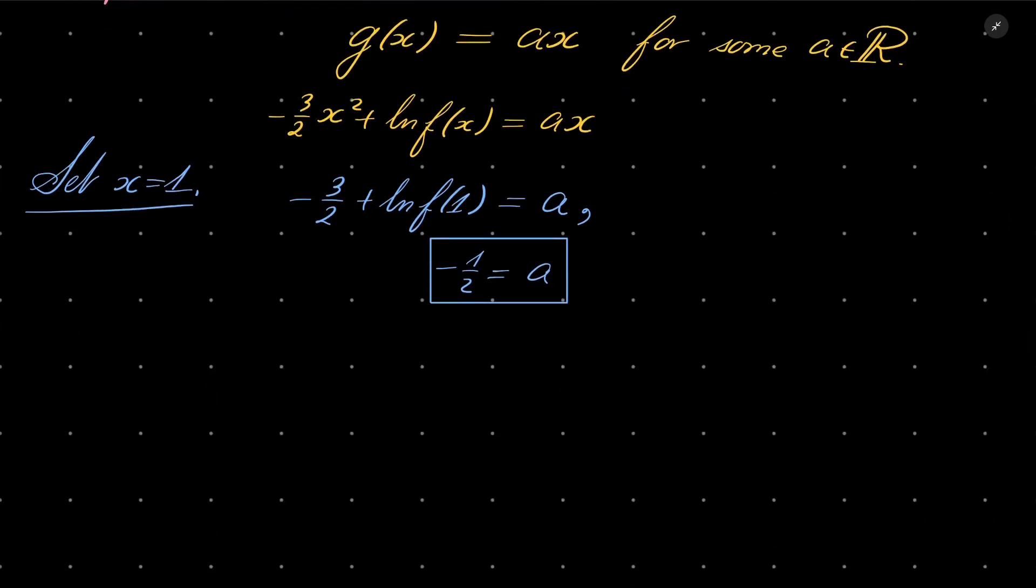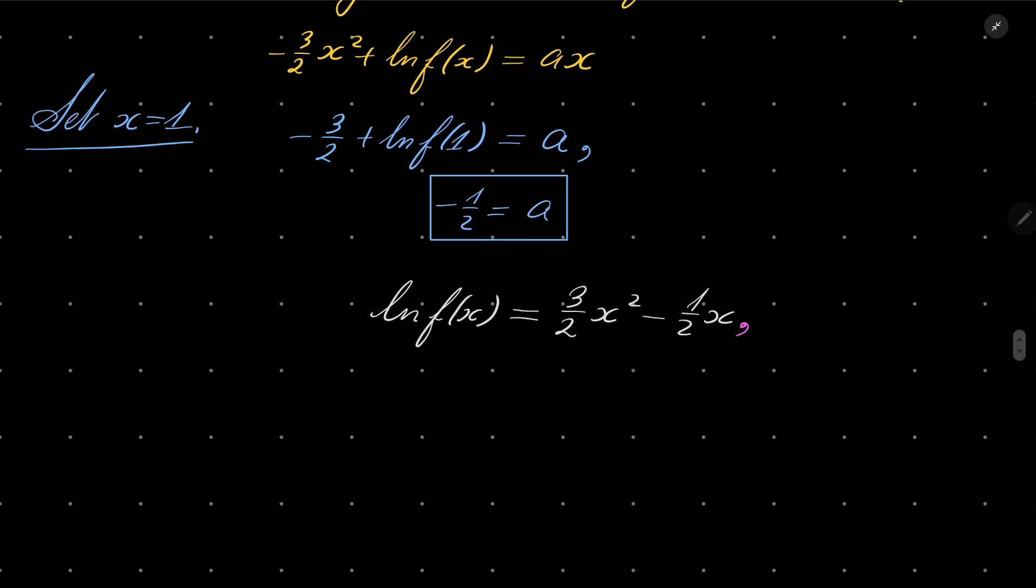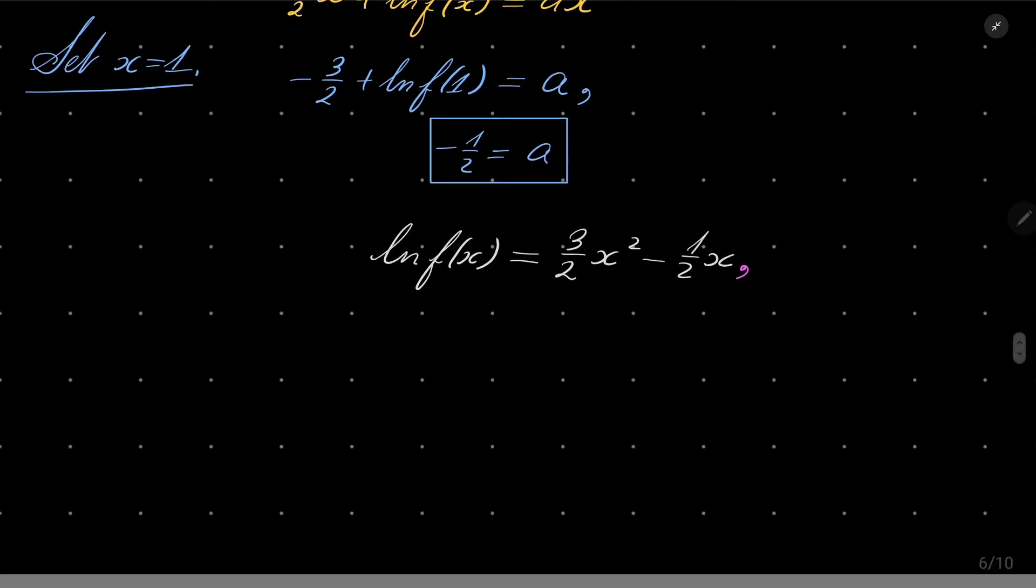And that means that natural log of f(x) equals 3 over 2x squared minus 1 half x. And finally, maybe we'll write it in pink, we take exponential function on both sides, and we get our answer. Our answer, our function equals e to the power, let's write it nicely, e to the power 3x squared minus x over 2.